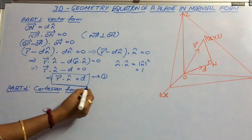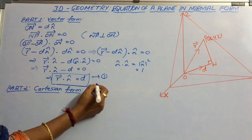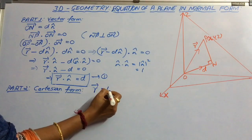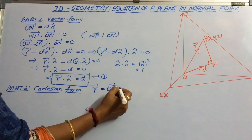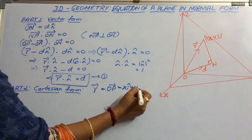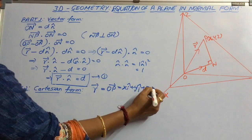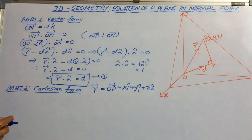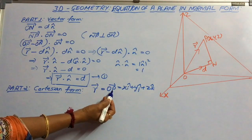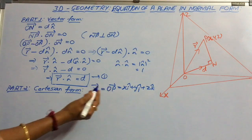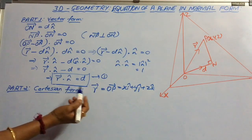let us consider vector r is equal to OP, that is equal to x i cap plus y j cap plus z k cap, because the coordinates of P are considered to be x, y and z. Similarly, n cap is a unit vector.